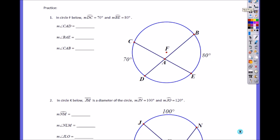In circle F below, F is usually referring to the center of the circle. But if they call it circle A, A is the center. Circle O, O is the center. And measurement of arc DC is 70. And measurement of arc BE is 80. What is the measure of angle CAD?